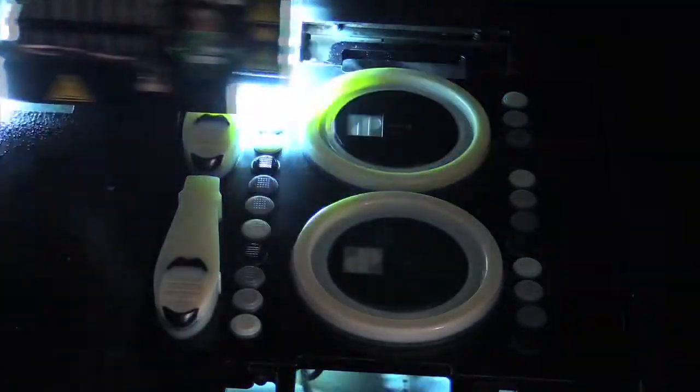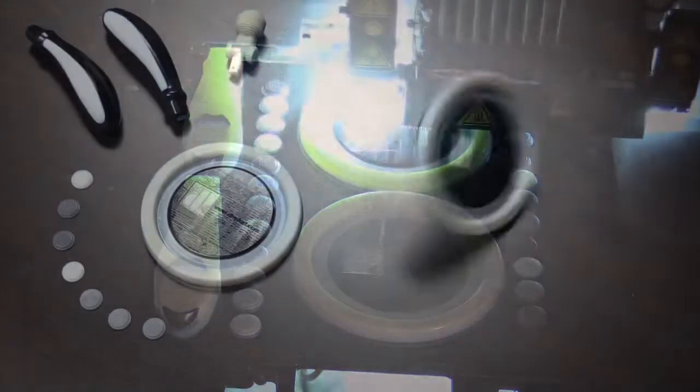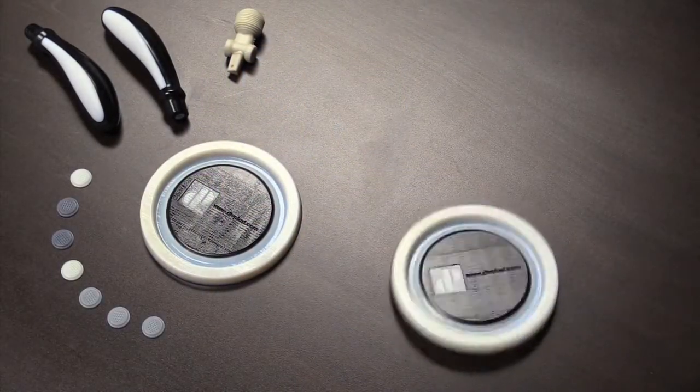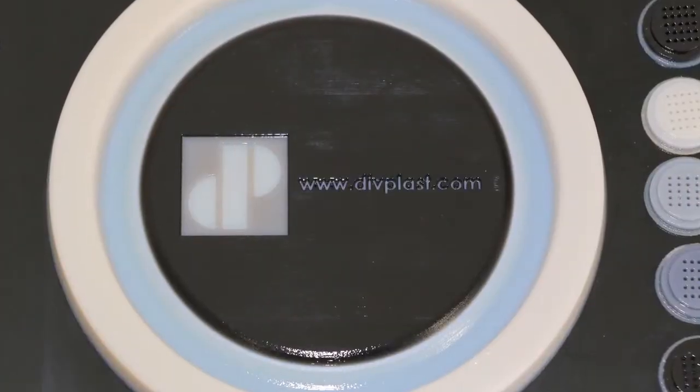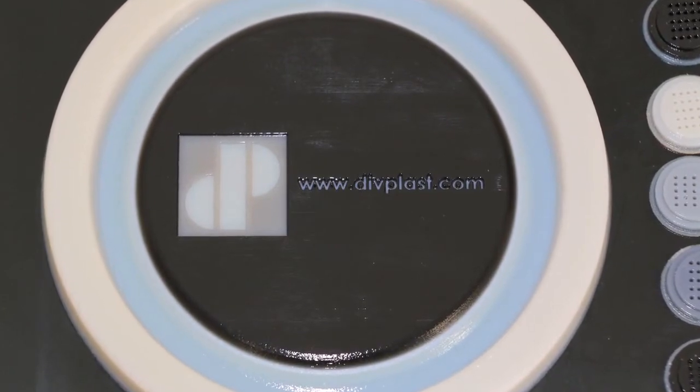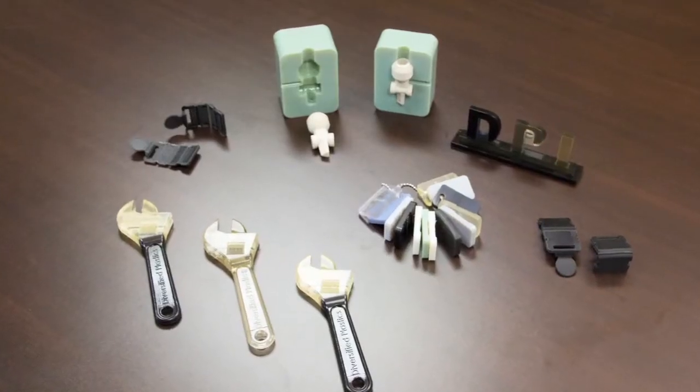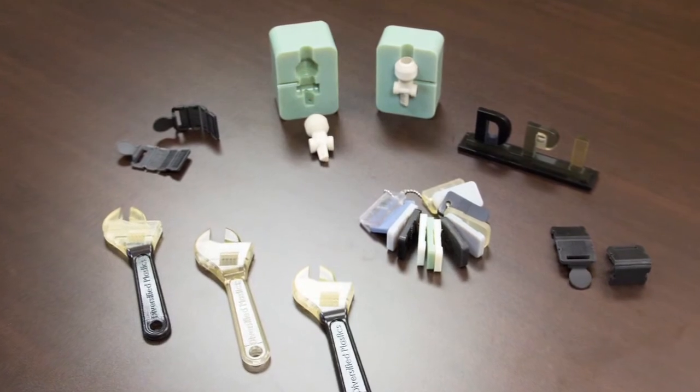From rubber to rigid, opaque to transparent, and ABS-like to polypropylene-like. There are even some materials that are biocompatible. Up to 14 different materials can be printed simultaneously in a single part.